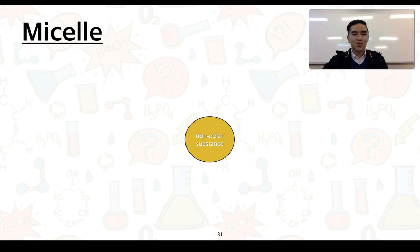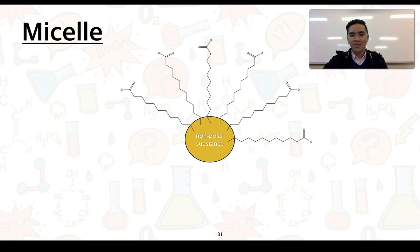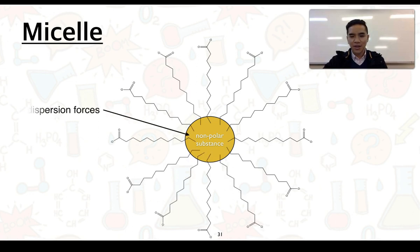Non-polar substances such as grease and oil are typically hard to remove through the addition of water alone. So we typically add a cleaning agent, such as a soap or a detergent, to assist in its removal. How do they actually go about trying to assist in their removal? In the middle here, we can see we've got a non-polar substance, like grease or oil. In terms of the soap ions, what we see is that they align themselves.